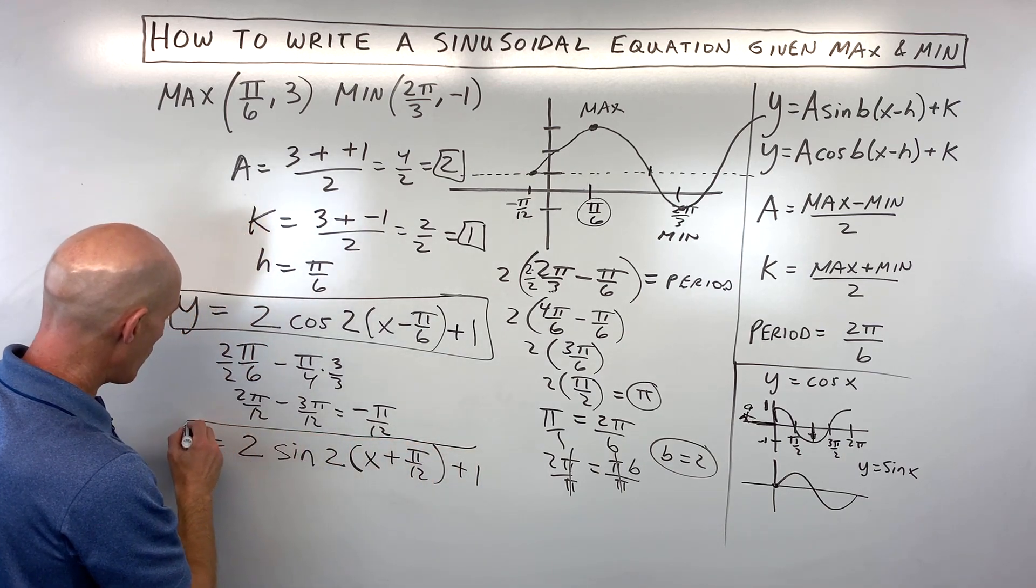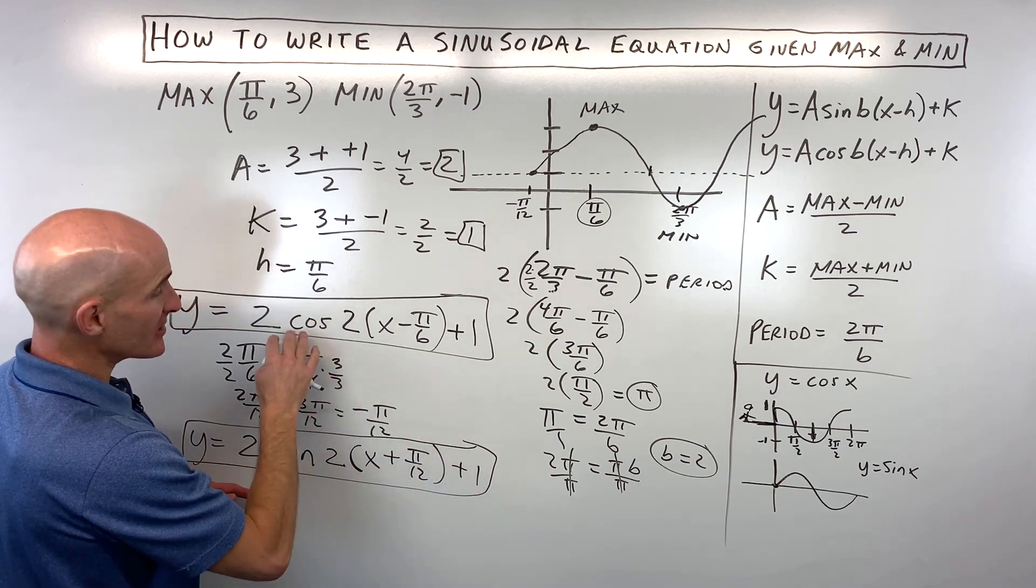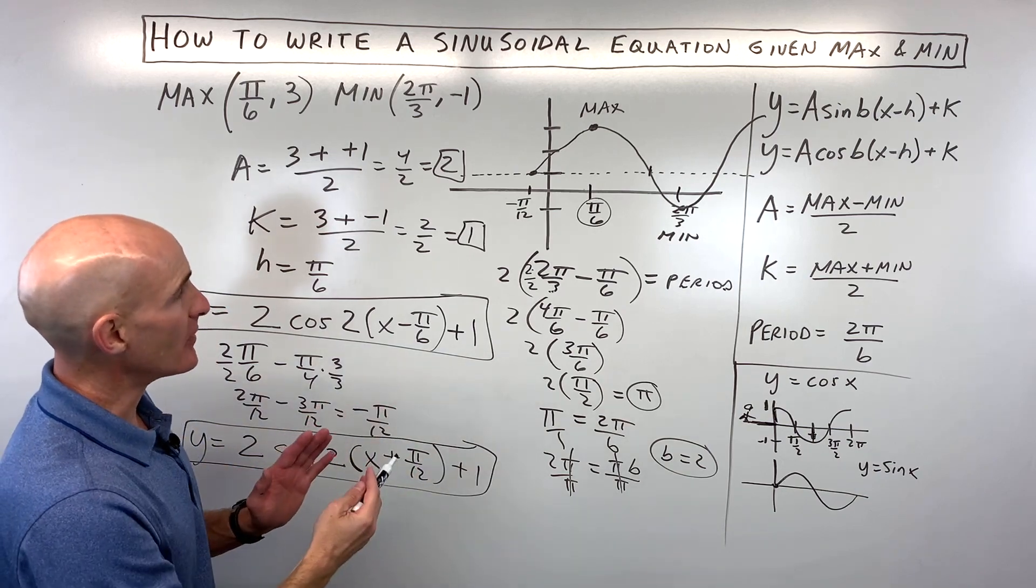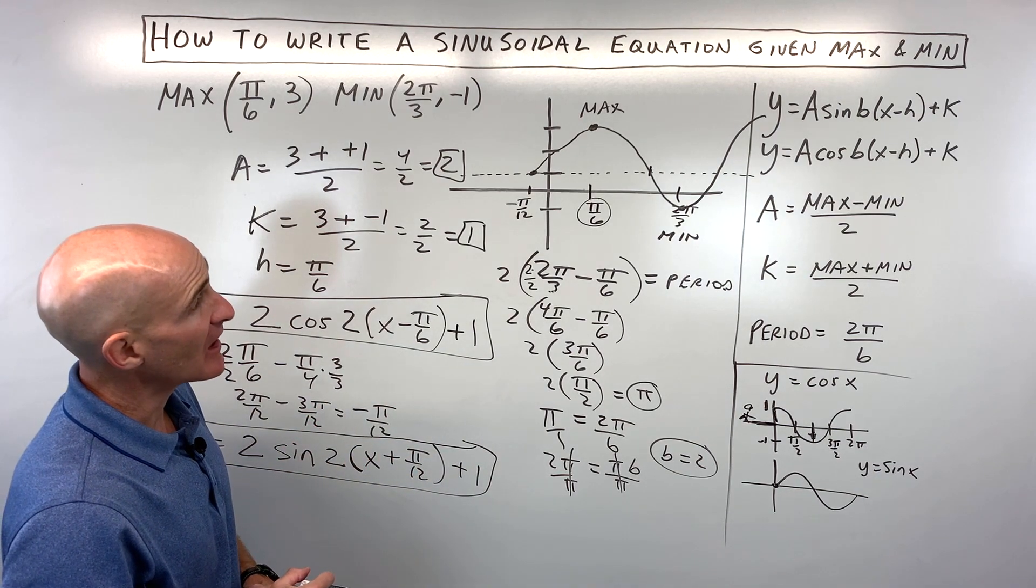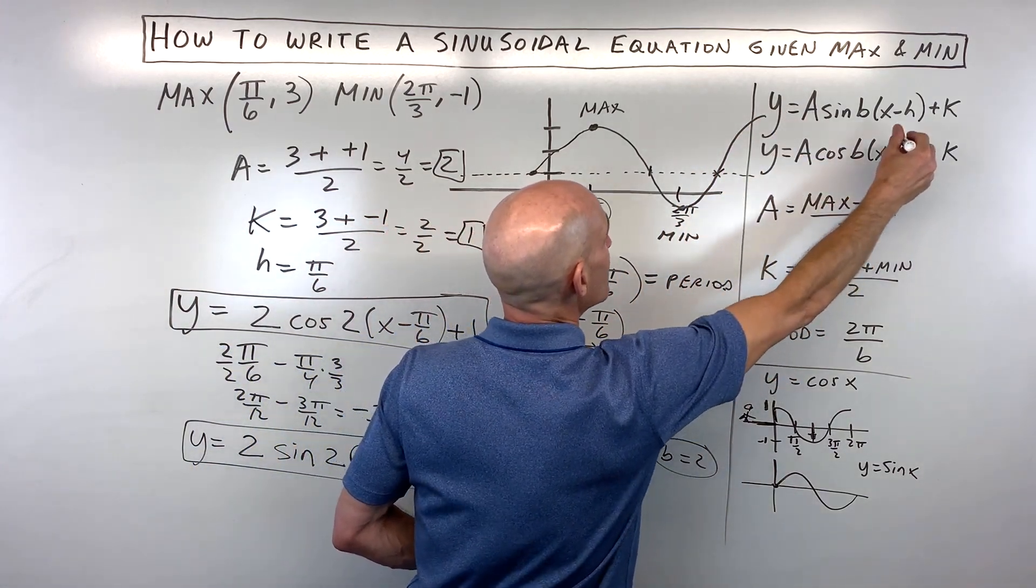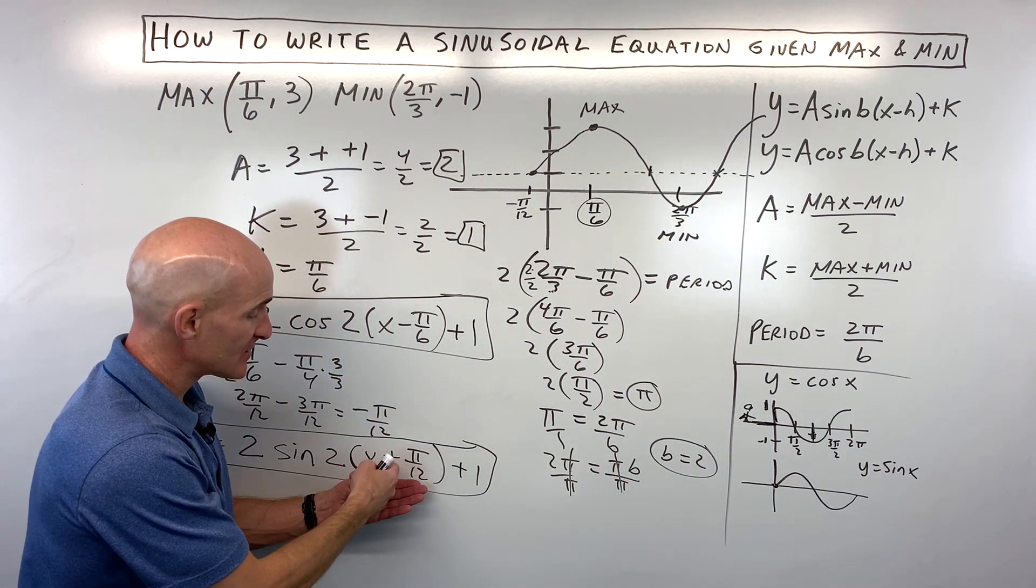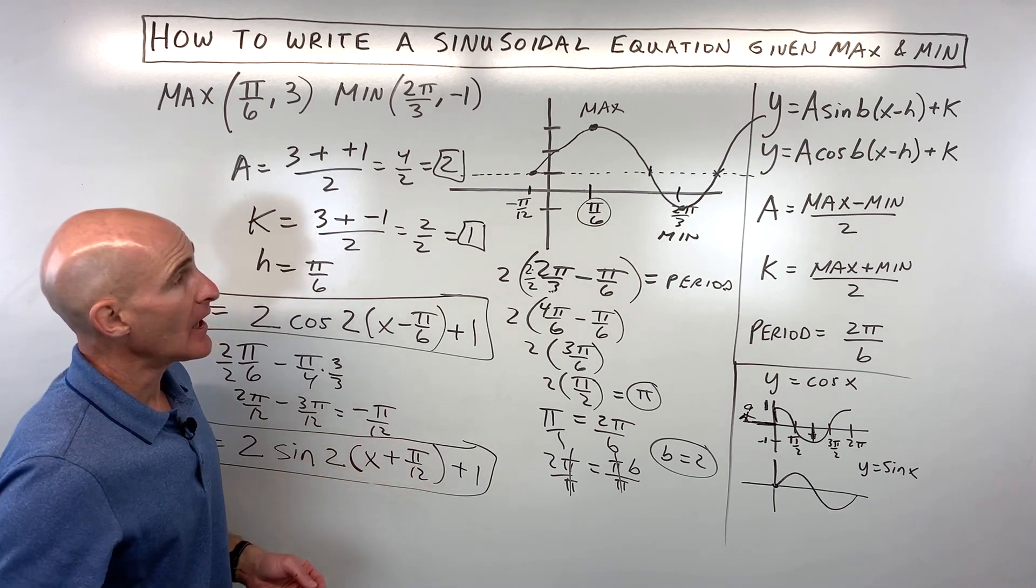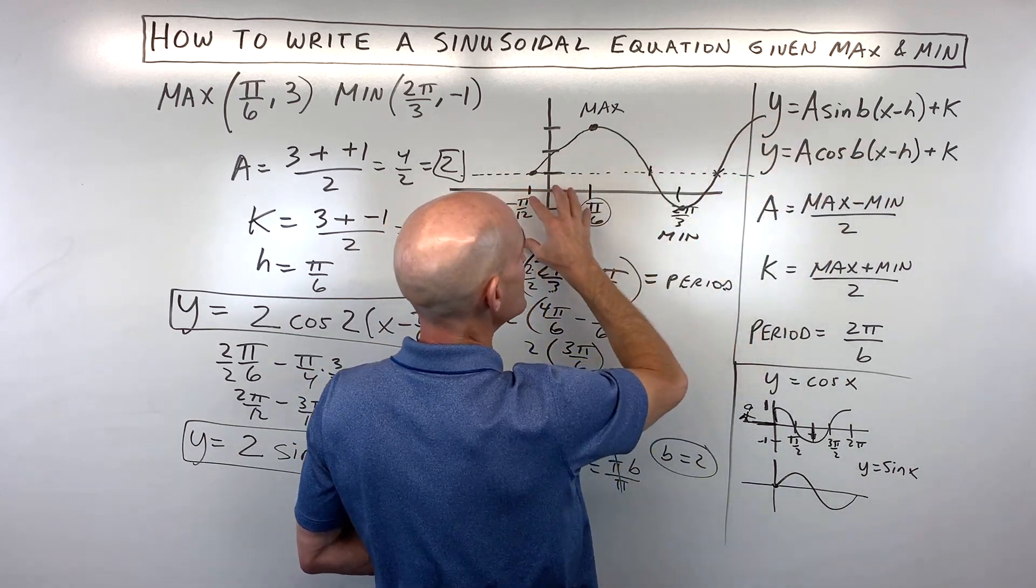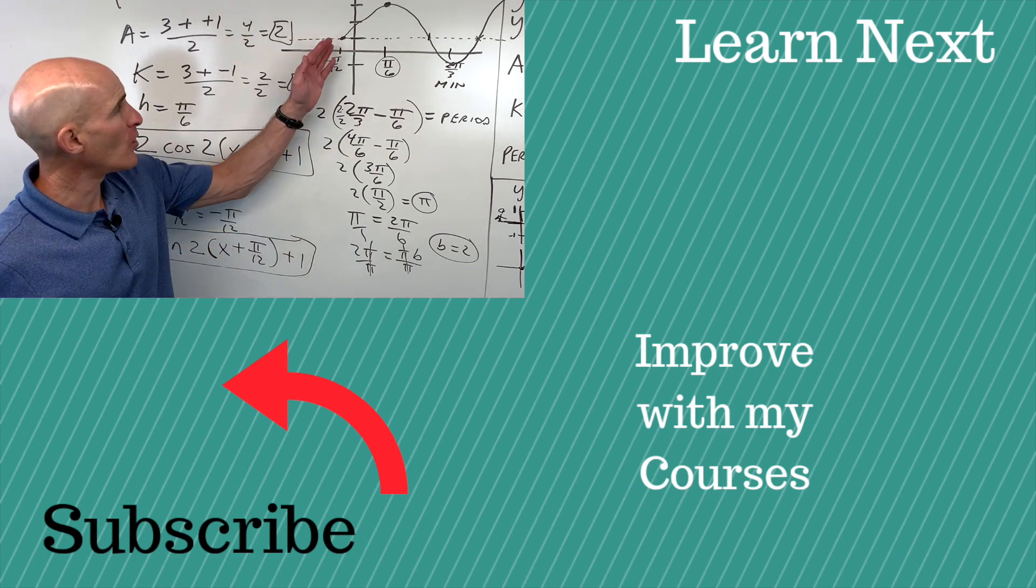Now you might be saying, aren't there other answers? And there are. Like you could say, maybe I want to start my sine graph right here and I'm going to go like that and make this the beginning point. And that's fine. The only thing that will change though, is this phase shift, this h value here. And same thing with cosine, you could say, maybe I want the cosine graph to start right here and go like that and just say that I shifted it right so much and up so much. So a lot of correct answers. I tend to pick the ones that are where it's not shifted too far from the origin.